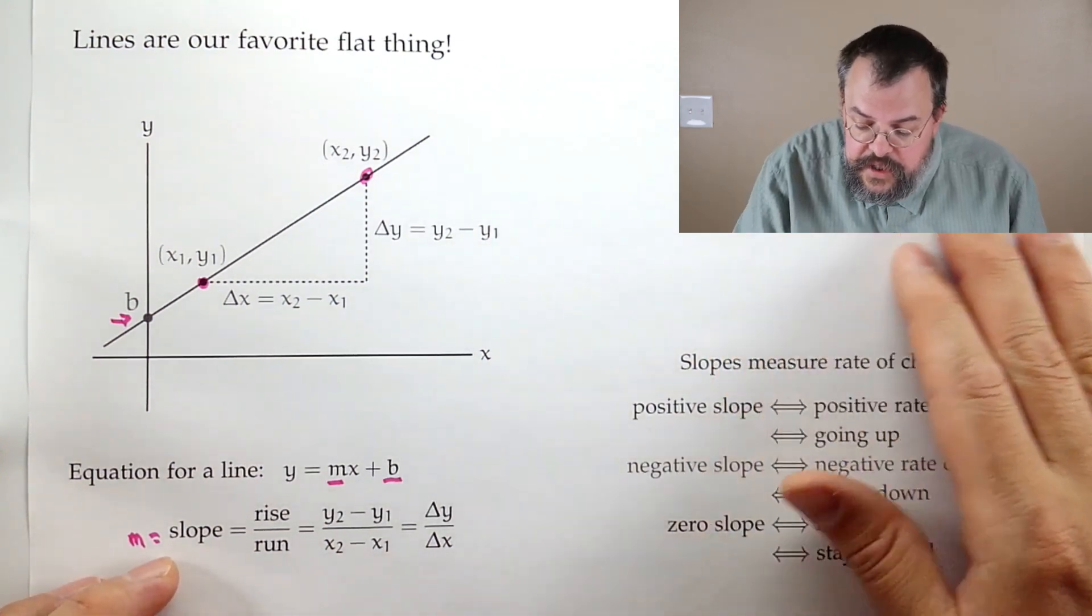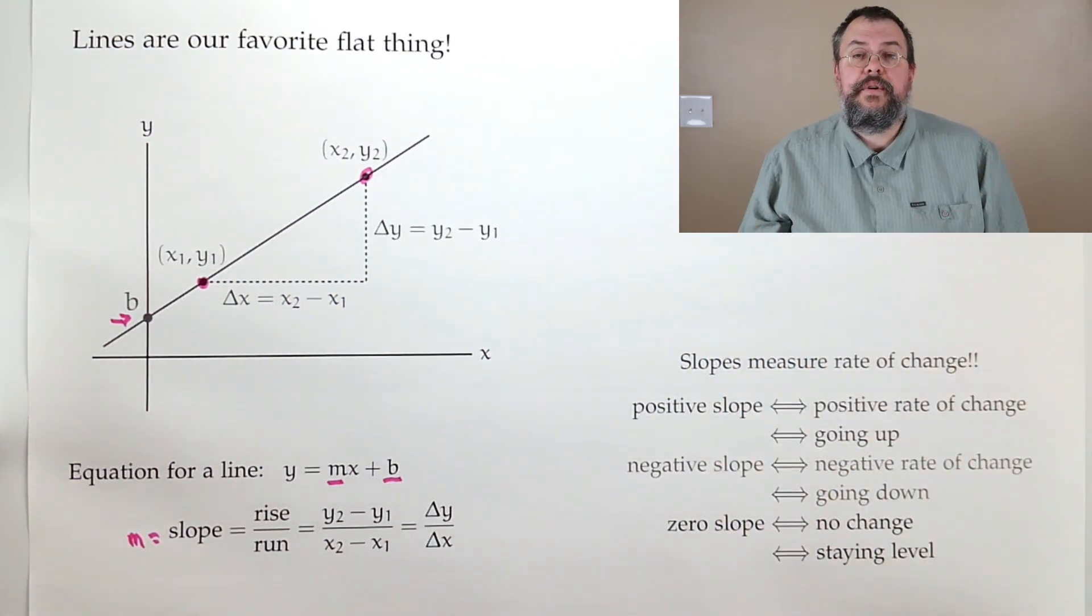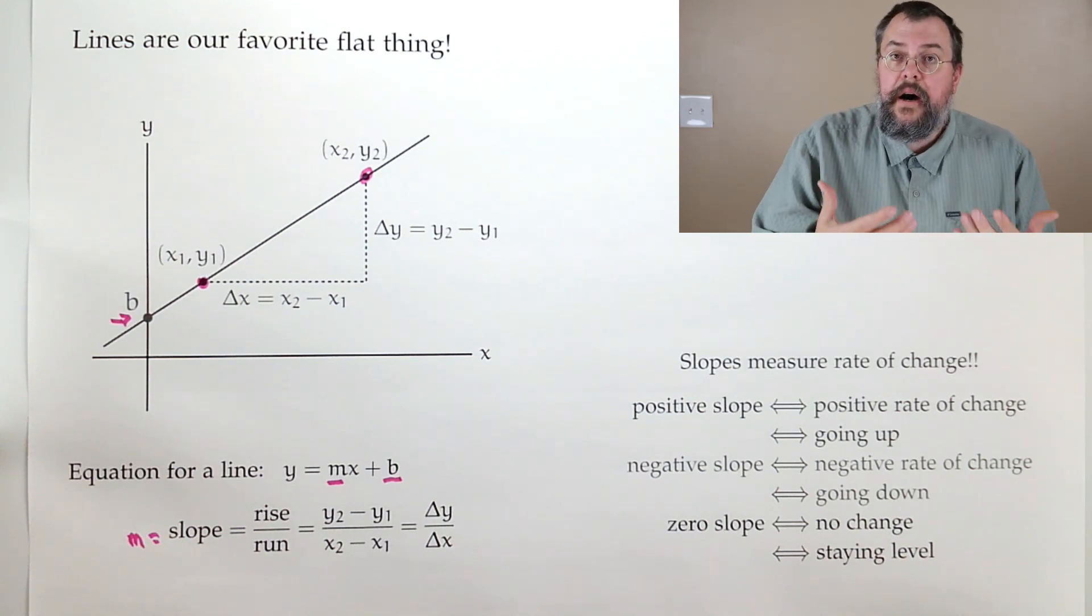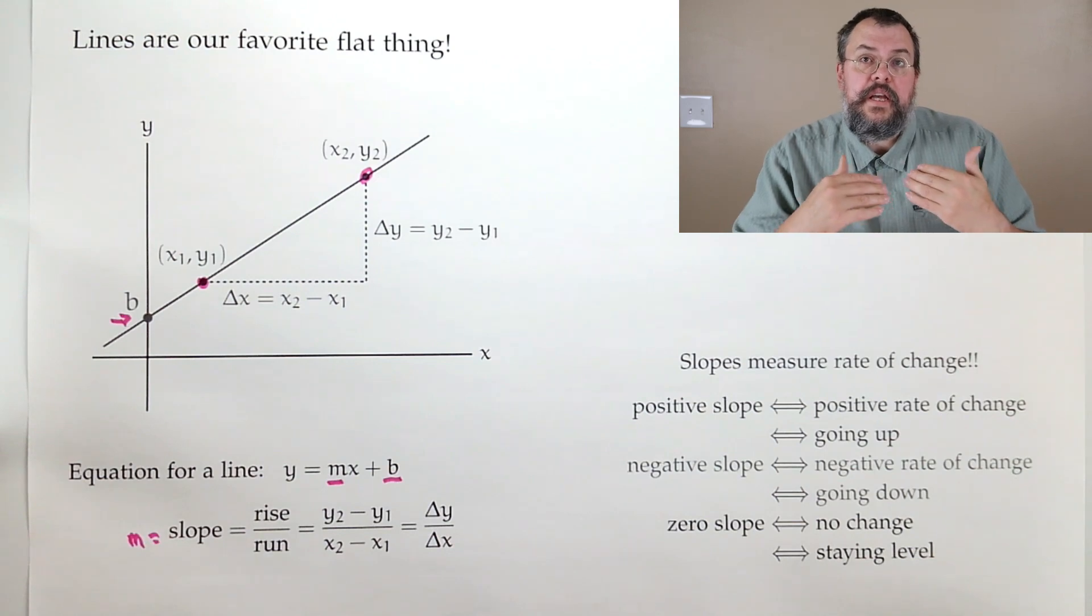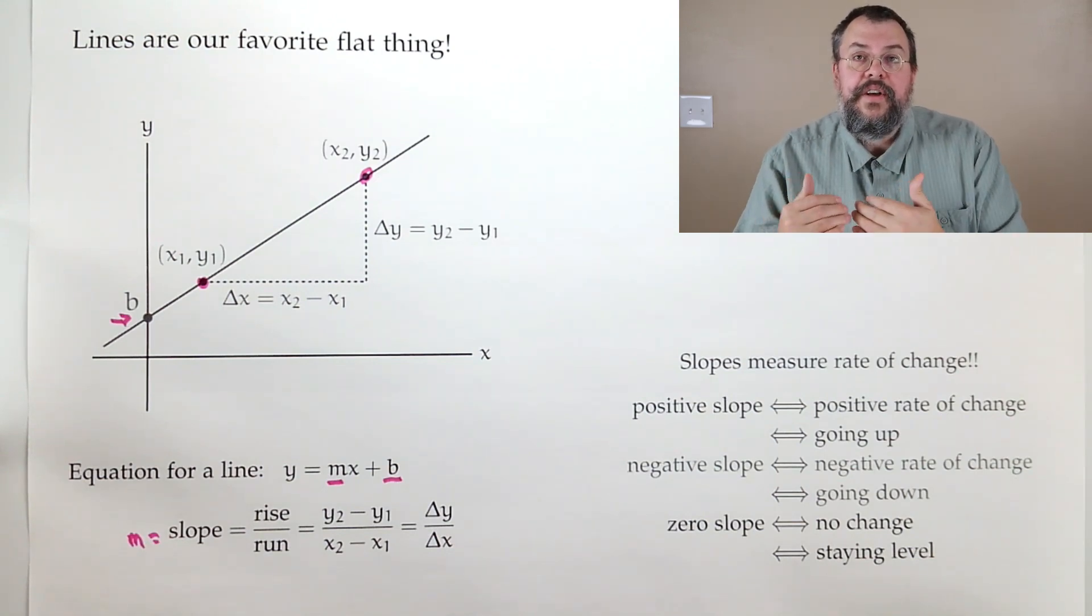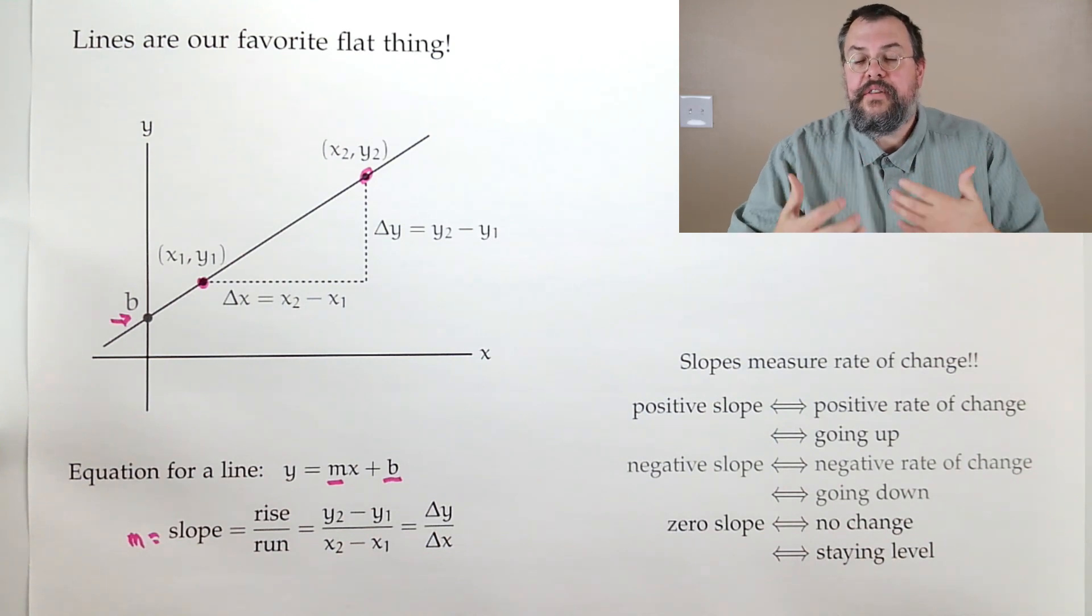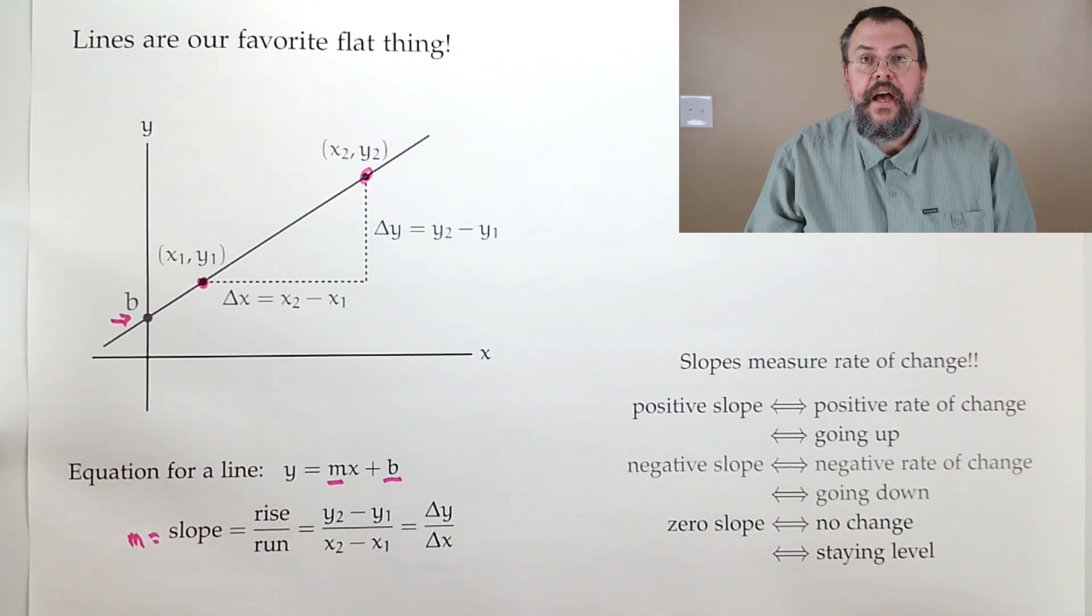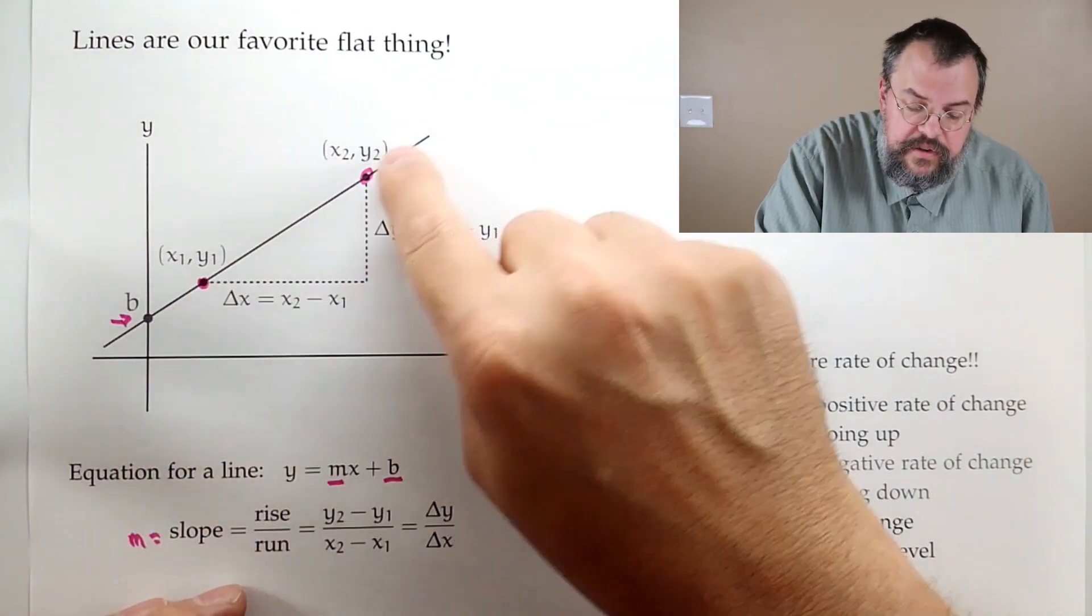So slopes, they're measuring our rates of change. And now we can start thinking about our intuition. So when we see a positive slope, what does that mean? Well, it means that if we increase X in a positive amount, then we increase Y in a positive amount. And so, in other words, they're somehow positively correlated. They move together. And we like to think of that as moving up. So, for example, this is a positive slope. We're going up.